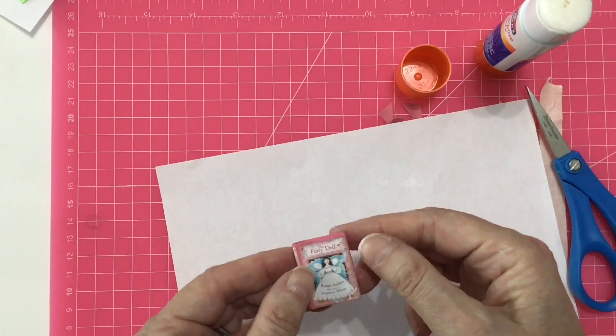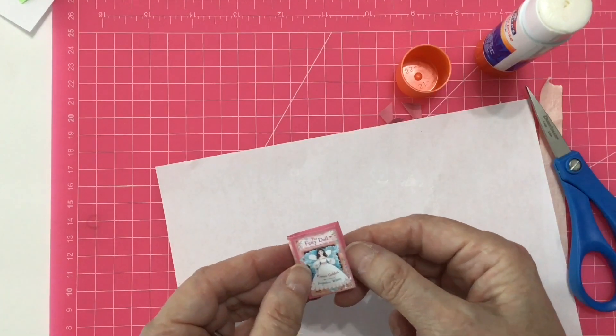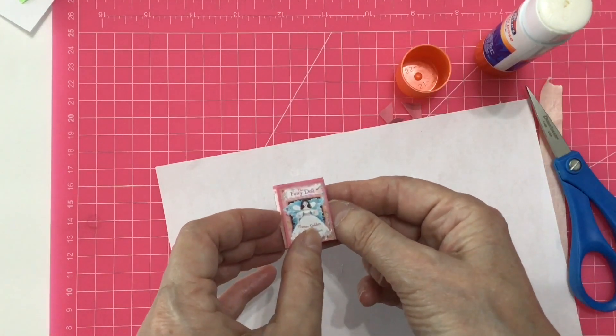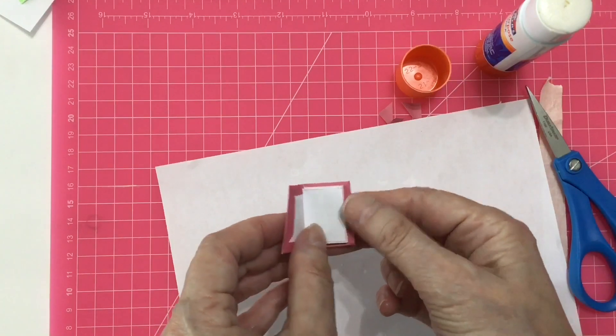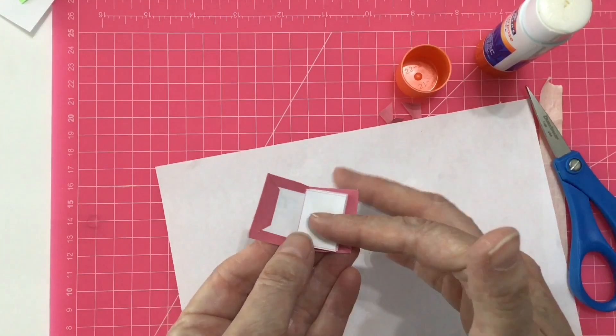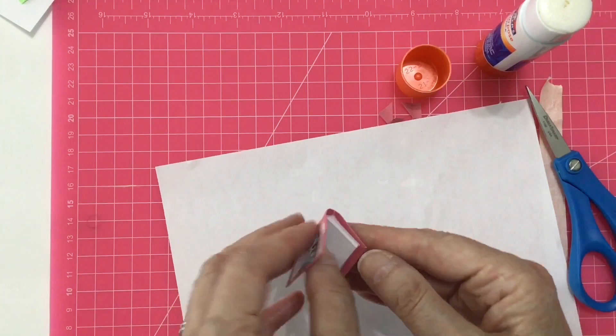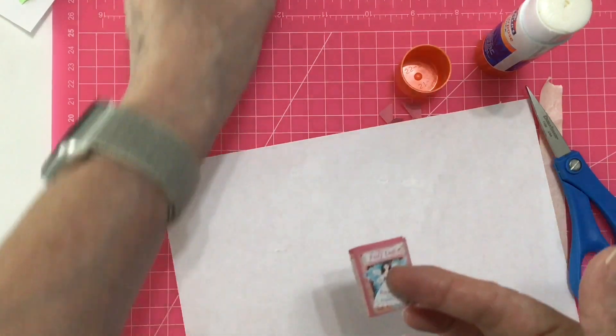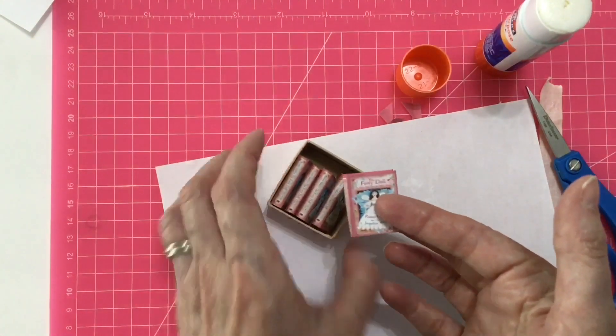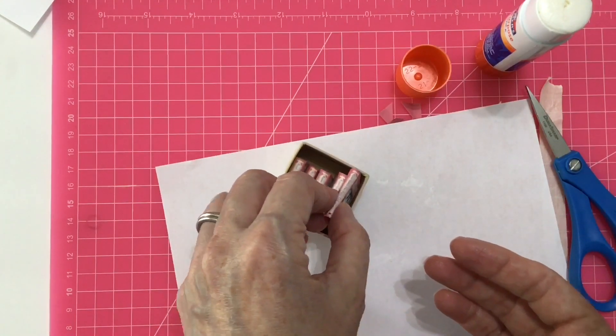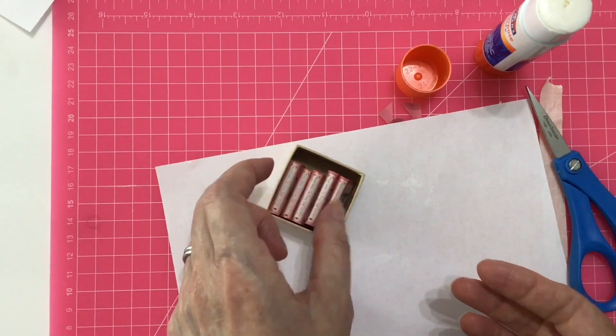And here is your book all done. Now if you were giving this as a gift or to keep on your dollhouse bookshelf, you could add end papers in here. You could make an entire box full of these little books and then your dolls could have their own little book club.